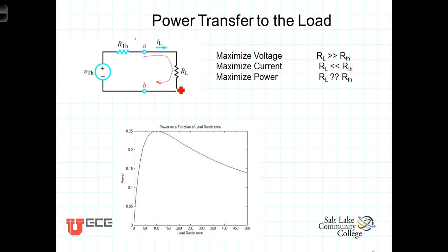What about power? Power is, after all, equal to I times V. And we have conflicting criteria here. So how does that reflect itself in the power? We know that power is equal to I times V, and we know that the current flowing in this circuit, I, is equal to V_Thevenin divided by R_Thevenin plus R_L.